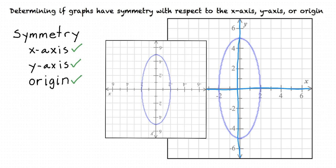So if there is symmetry with respect to an axis, that means that the particular axis acts like a mirror for the graph. And if there is symmetry with respect to the origin, it means that we can rotate the graph 180 degrees and it will be identical to its original form.